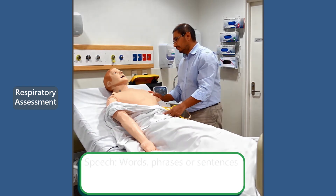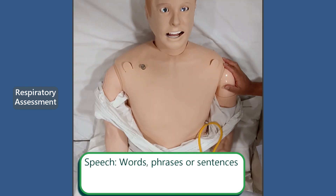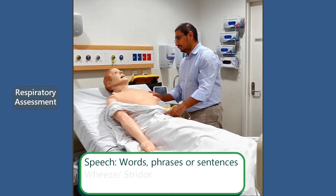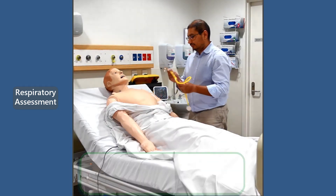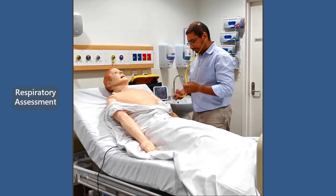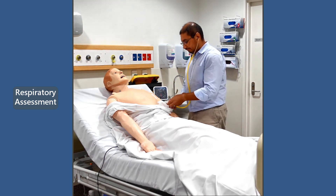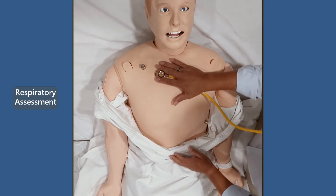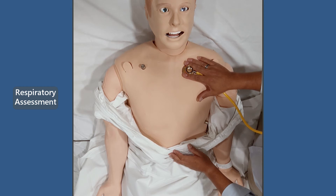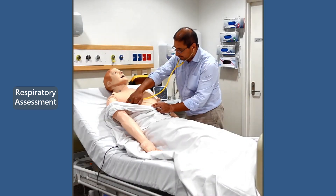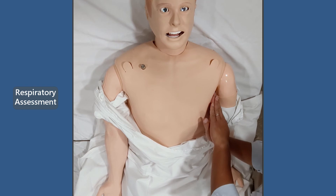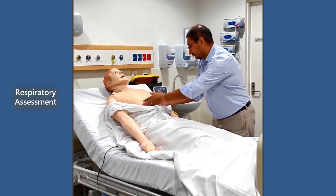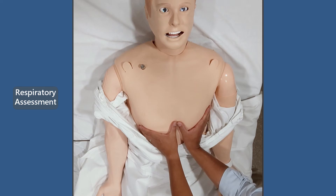Listen to the patient's speech. Are they speaking in words, phrases, or sentences? Is there any audible wheeze or stridor present? In infants, you might note grunting respirations. Using a stethoscope, auscultate the patient's chest and back using a step-ladder approach, noting the presence or absence of breath sounds. Are there any wheezes or crackles present? Palpate the chest and back for equal rise and fall, symmetry, subcutaneous emphysema, or any other injury. For more information, please refer to the other resources available as part of the Rural Generalist Nurse Education Program.